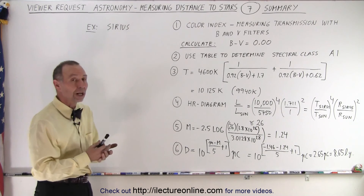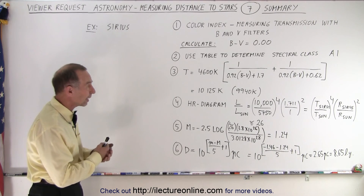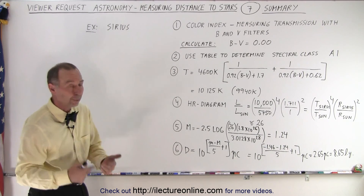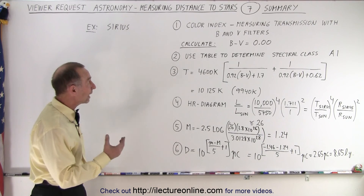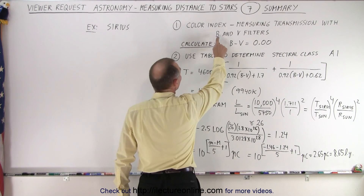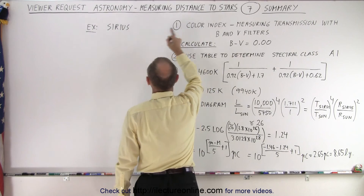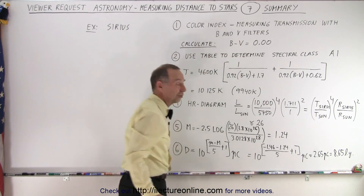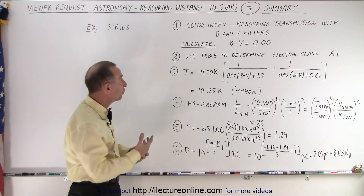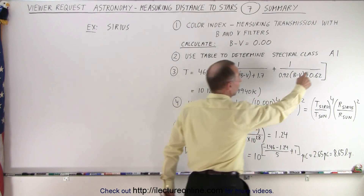First we use color filters: blue filters, ultraviolet filters, visible light filters, and potentially other filters as well, like red filters and infrared filters, to get what we call the color index. The most important one is the difference between the blue and the visible light filters. The difference for Sirius is 0.00. Then we use that value and a table of different color indices to determine the type of star we're dealing with.